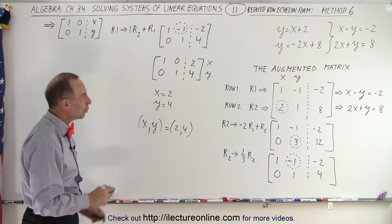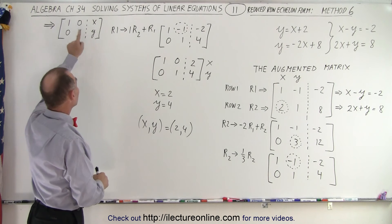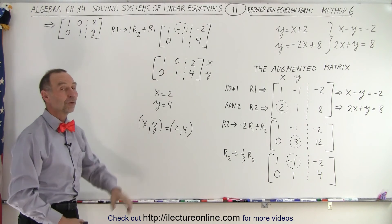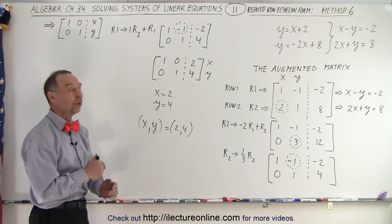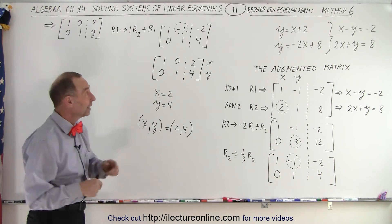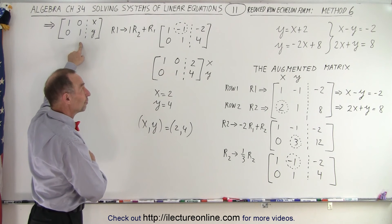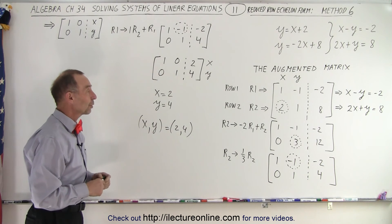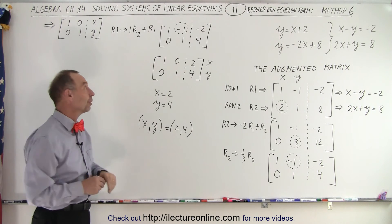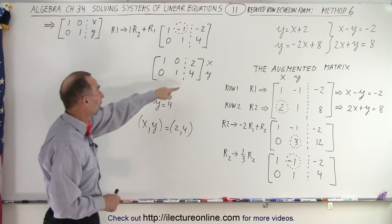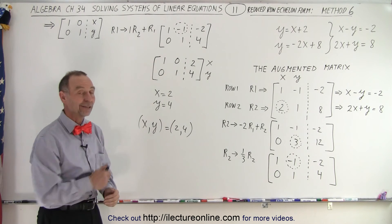When you use the reduced row echelon form, you work it all the way to the end, and then you simply read off the results. It's only one extra step compared to the row echelon form. So for me, this is definitely the preferred method if you're going to use this kind of method to solve a linear system of equations. I would just go all the way to the reduced row echelon form because then the answers are simply picked right off the augmented matrix. And that is how it's done.